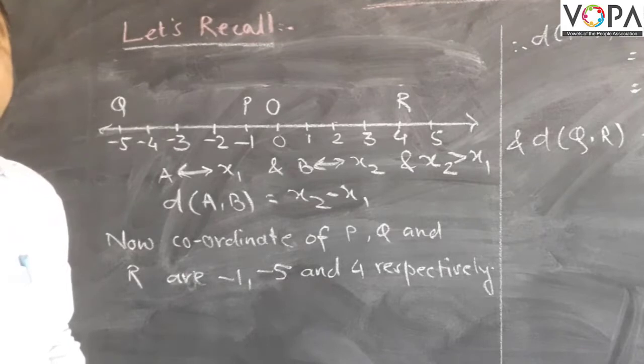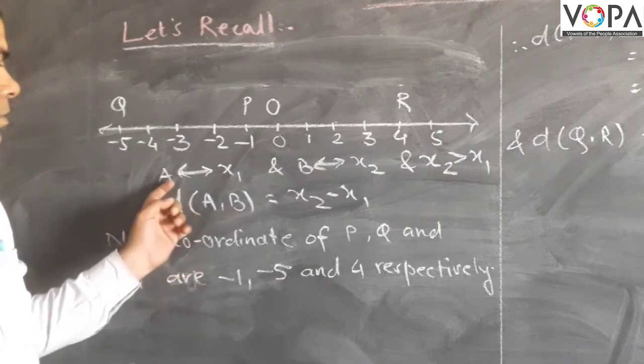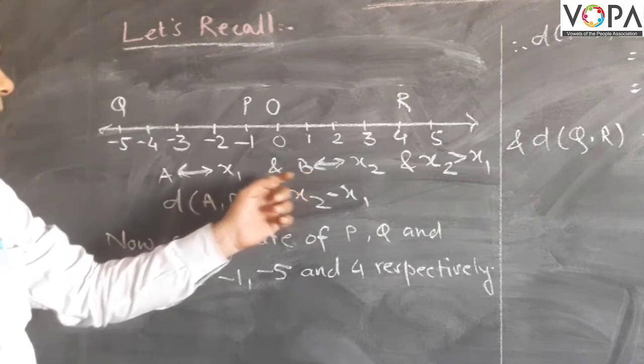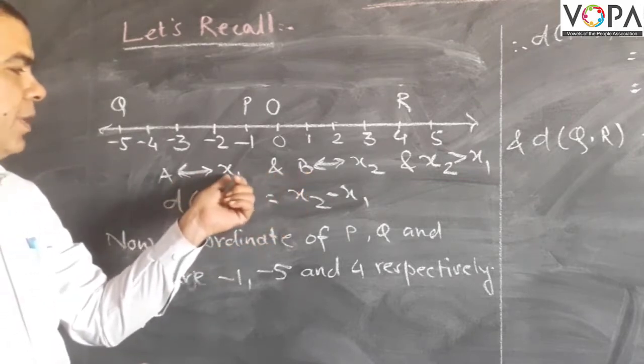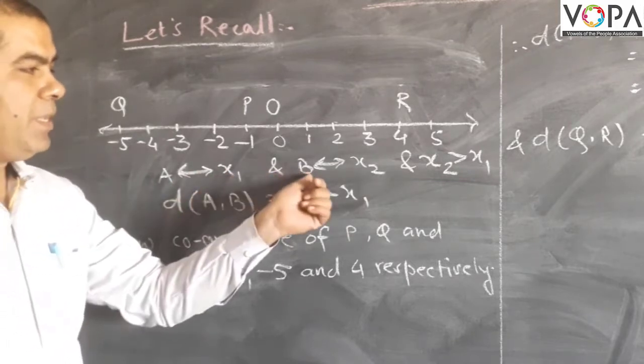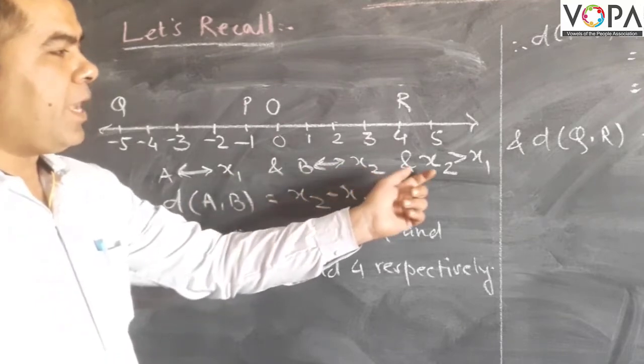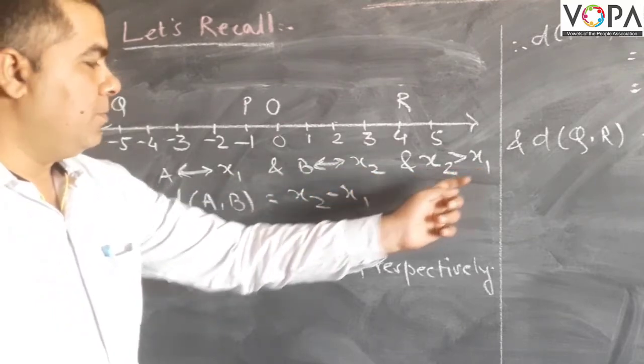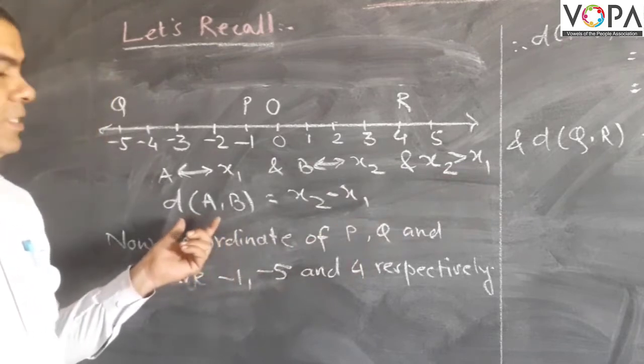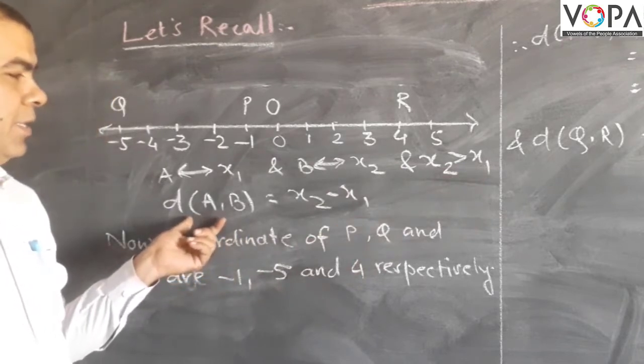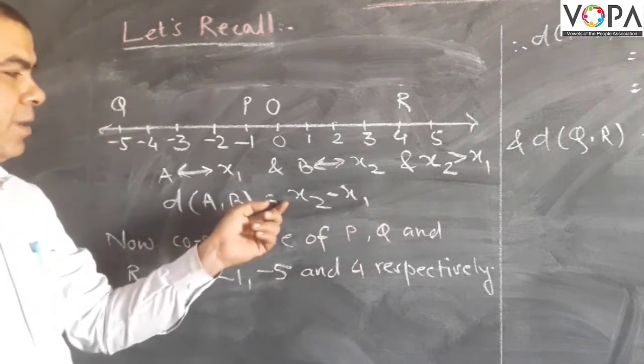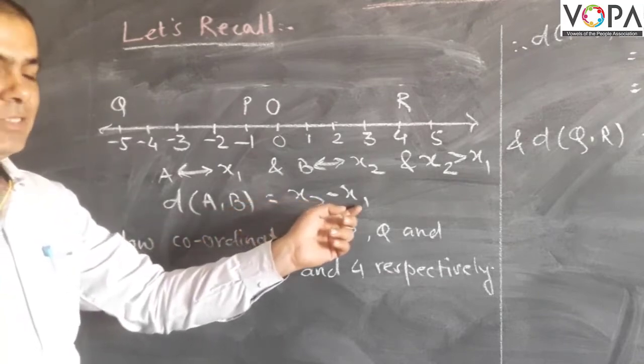To find the distance between two points, suppose A and B, consider the coordinate of A is x1 and B is x2. And also x2 is greater than x1. The distance AB is then given by x2 minus x1.